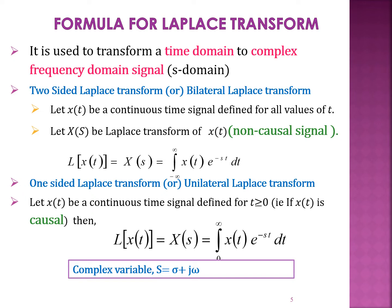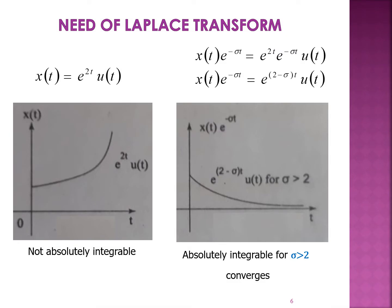As discussed, if a signal does not converge in Fourier transform, we go in for Laplace transform. Let us see how the signal x of t equal to e power 2t u of t converges under Laplace transform. What we do is multiply x of t by e power minus sigma t. So we get e power 2t times e power minus sigma t, which can be rewritten as e power (2 minus sigma) t times u of t. When sigma is greater than 2 — for example, sigma equals 3 — we get e power (2 minus 3) t which is e power minus t, and in that case the signal converges. That is why we go in for Laplace transform where Fourier transform cannot be used.